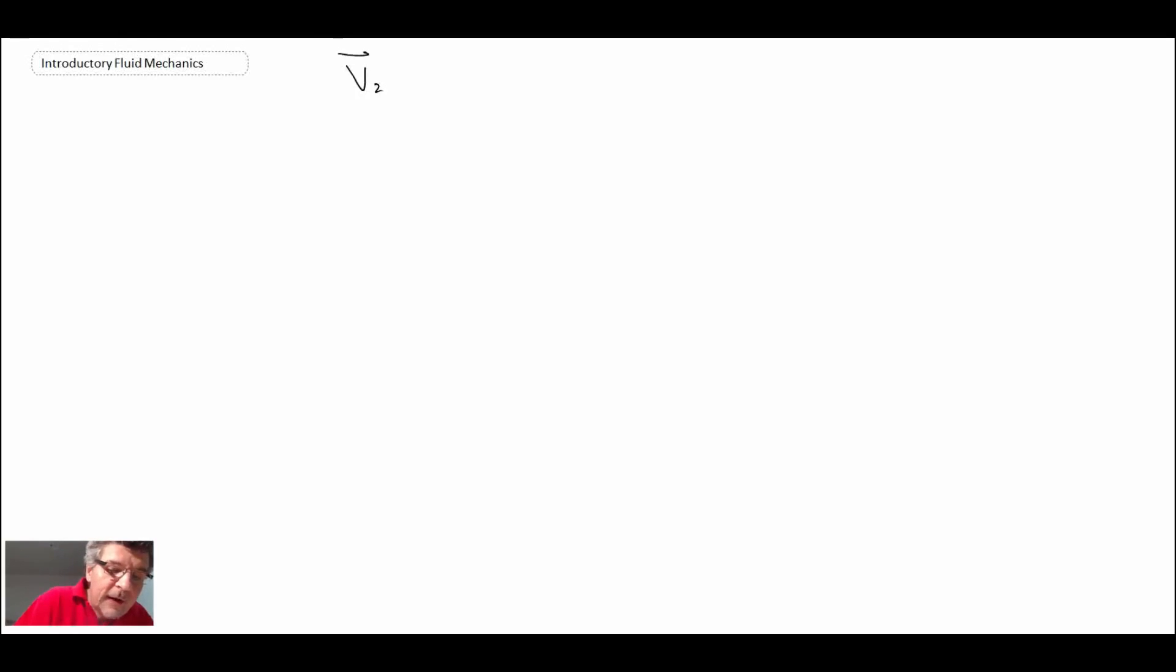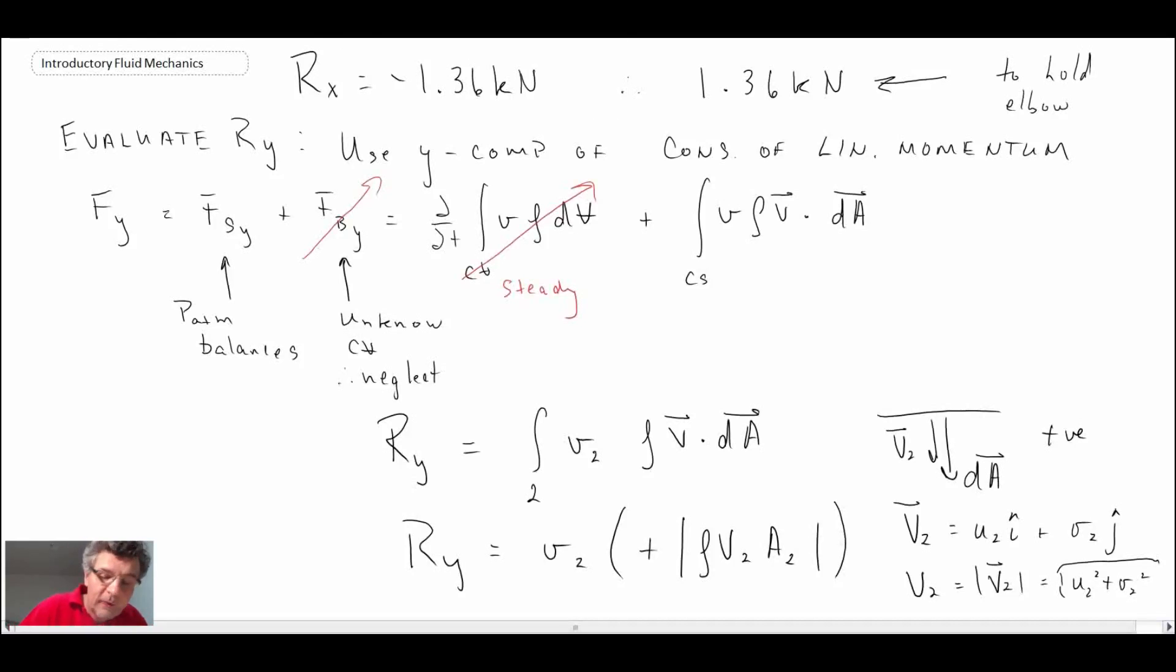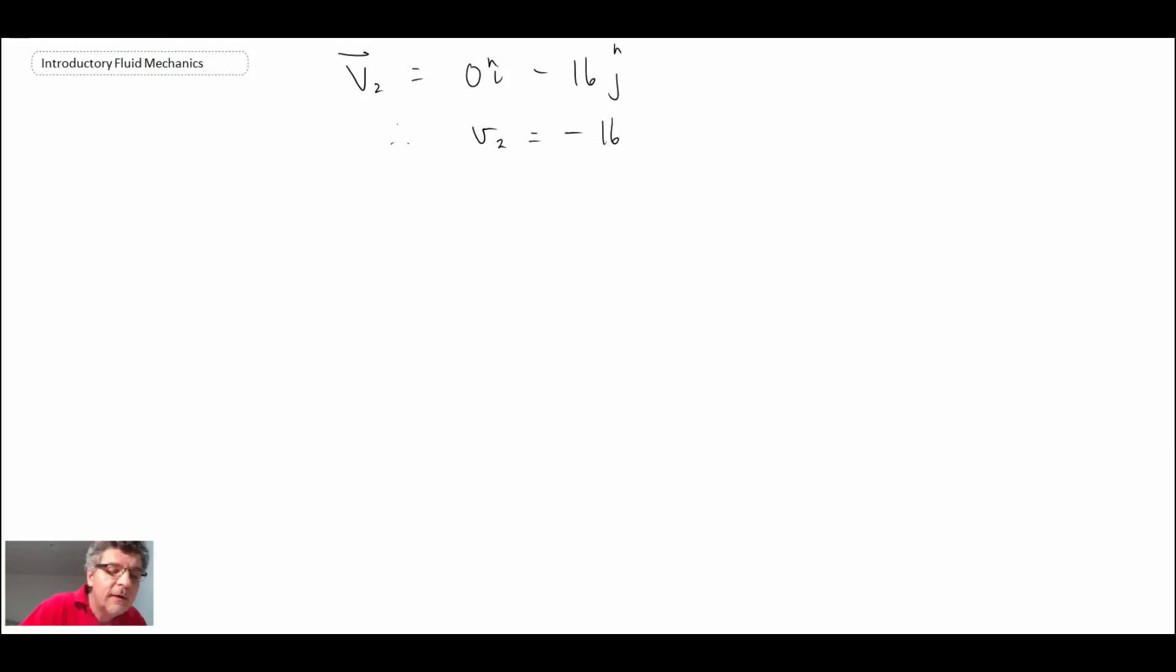So, V2, we can write it out as a vector with 0 in the I minus 16J. Therefore, little V2 in our equation is minus 16. So let's look back. This is where we have to be careful. You have to carry that minus sign here. Remember, I told you about that earlier. We know the dot product was positive, so we've resolved that. But we've got to be careful about the sign of V2. And this tells us that V2 is going to be a negative. Therefore, we write R-Y is minus 16 multiplied by the density of water is 1,000, and resolve the vector component there, the magnitude of the vector. That's 16 squared plus 0 and then the area.